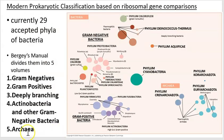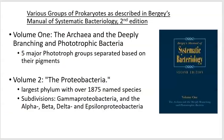Looking at this modern classification, there are currently 29 accepted phyla for the bacteria. Remember the hierarchy: domain, kingdom, phylum — so phylum is high up and represents a general grouping. Looking at Bergey's Manual, they divide these organisms up into five different volumes.